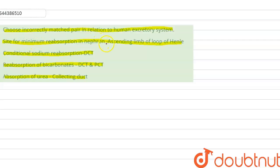Minimum reabsorption in nephron is the ascending limb of loop of Henle, so this is the correct statement. Next, conditional sodium reabsorption—yes, this takes place in the distal convoluted tubule, so this is also correctly matched.